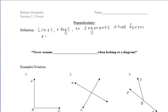Let's define perpendicularity. Lines, rays, or segments that intersect at right angles are perpendicular. We can never assume perpendicularity when looking at a diagram. We would have to be told that lines, rays, or segments are perpendicular, or that we have right angles.